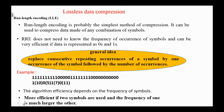The simplest method of lossless data compression is run-length encoding. Run-length encoding does not need to know the frequency of occurrence of symbols and can be very efficient if data is represented as zeros and ones. The general idea is to replace consecutive repeating occurrences of a symbol by one occurrence of the symbol followed by the number of occurrences. For example, for a given bit sequence, we can compress it to: 1 repeated 10 times, then 0 five times, then 1 seven times, then 0 eleven times, and so on. The algorithm efficiency depends on the frequency of symbols and is most efficient when only two symbols are used and the frequency of one is much higher than the other.